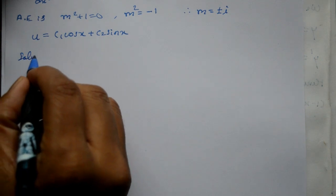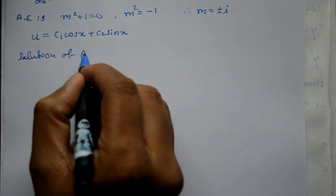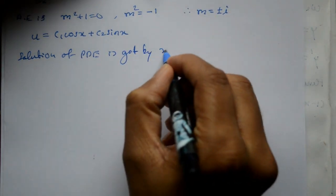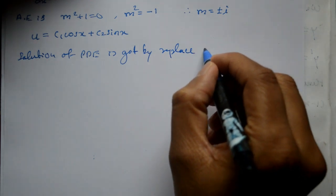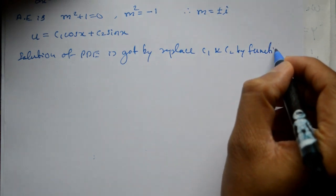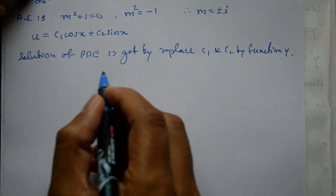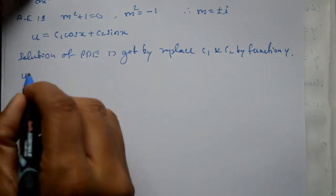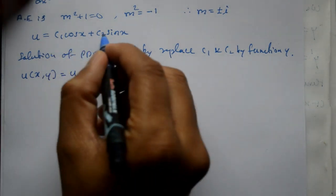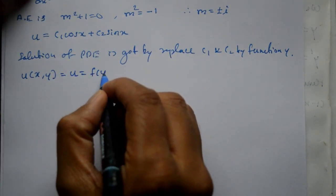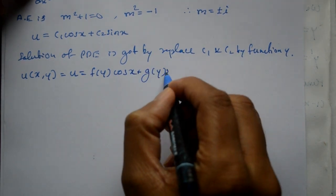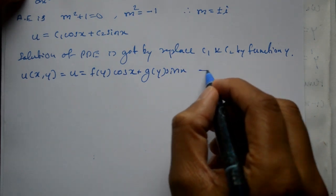Next, solution of partial differential equation is got by replacing c₁ and c₂ by functions of y. The solution of PDE is given by u(x,y) = f(y)·cos(x) + g(y)·sin(x). This is equation 1.